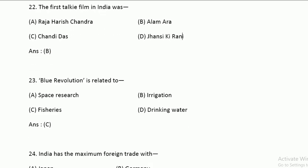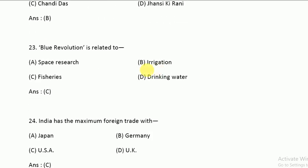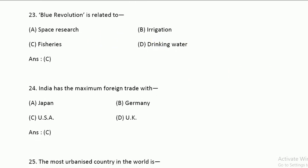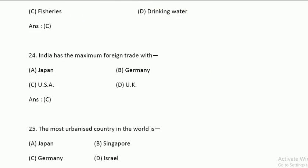Blue Revolution is related to fisheries. White Revolution is related to milk. Silver Revolution is related to eggs. Green Revolution is related to agriculture.